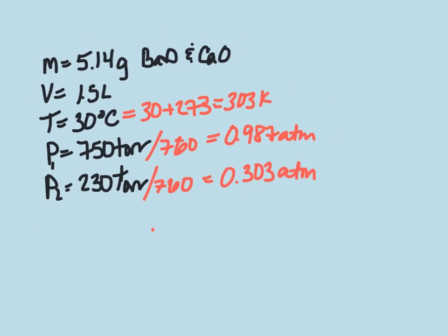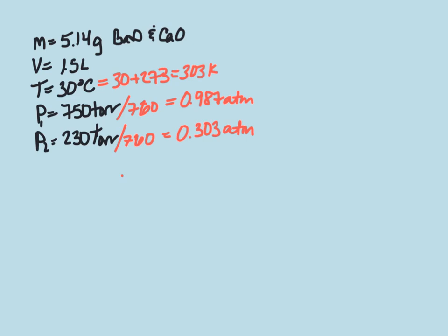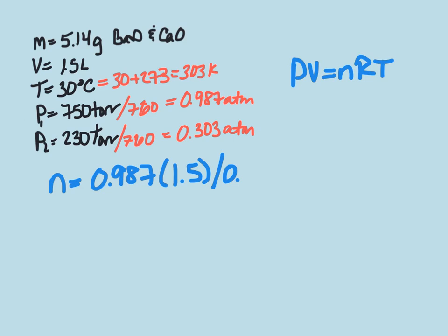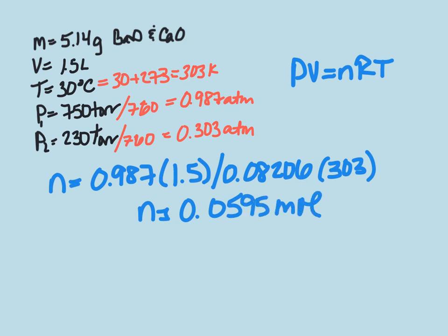Now that we've got those converted, we can leave our volume in liters. Let's go ahead and first figure out how many moles of carbon dioxide we start off with, and then how many moles we have after the completion of the reaction. So to start us off, we're going to use PV equals NRT, but we're going to solve for N. So N equals our pressure, so our initial pressure, 0.987, times our volume, which is 1.5, divided by our gas constant, 0.08206, times our temperature, which is 303 Kelvin. And we have that we initially started with 0.0595 moles of carbon dioxide.